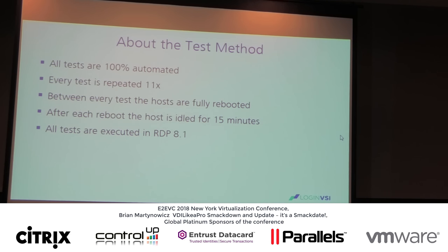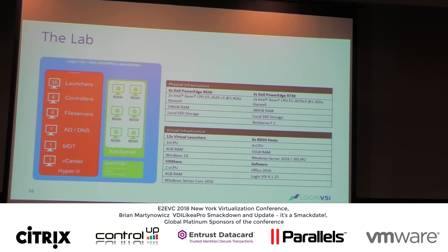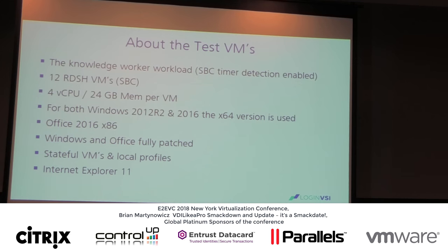My test methods: tests are fully automated, repeated 11 times, every host is rebooted between test results, and we allow idle time to let the machines optimize. We're testing with RDP 8.1. Our lab uses PowerEdge R730 machines, six RDS hosts, launcher components acting as endpoints where protocol data is streamed, Office 2016, and the latest version of VSI. We're doing the knowledge worker workload on 12 RDSH VMs.